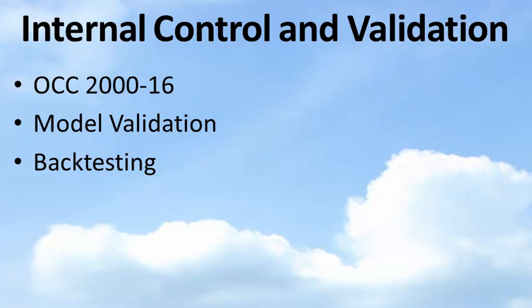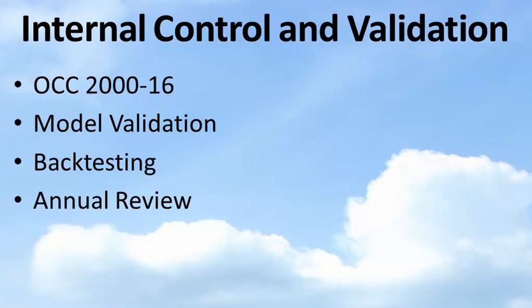Backtesting is a key part of the entire process. Backtesting compares the results of your interest rate risk model to the actual results received by the bank. It gives you a way of helping to assess the degree to which your model accurately represents and models the interest rate risk sensitivity of the bank. And then the board of directors is charged with the responsibility for ensuring that there is an annual review — we typically call it the independent annual review — of the entire ALCO process, all the board-approved policies, strategies, and limits.